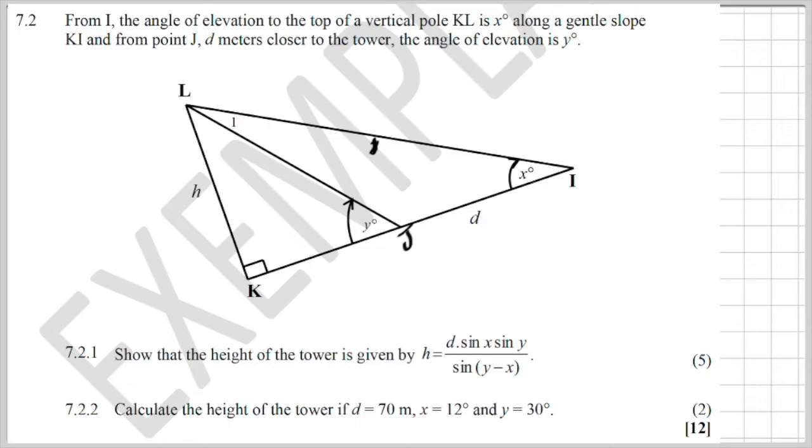And from J, which is d meters from the tower, the angle of elevation is y degrees. Show that the height of the tower is given by that. So I want to give you a few minutes. You go and try it yourself. Come back. And then we work through this question step by step.